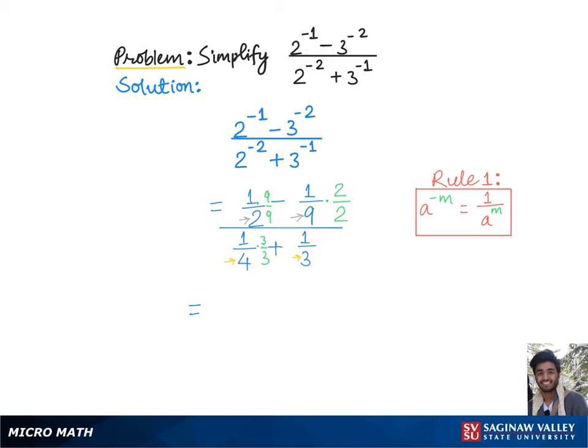Which gives us 9 over 18 minus 2 over 18, divided by 3 over 12 plus 4 over 12. Now since we have common denominators we can simply operate the numerators.